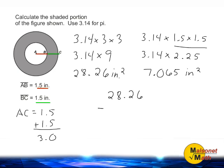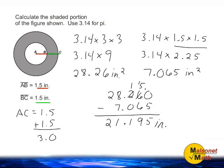Now we must subtract 7.065 from 28.26. When subtracting decimals make sure the decimal is lined up and place a zero in any blank spots. After subtracting the two areas together we have a difference of 21 and 195 thousandths. That would be the area of the section that is shaded in gray.